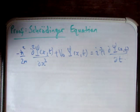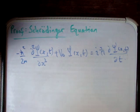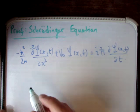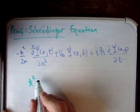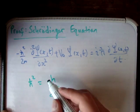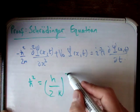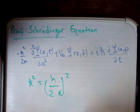Now I'm going to quickly explain the components here. This constant h-bar squared — h-bar is equal to Planck's constant h over 2π. So h-bar is Planck's constant divided by 2π, and here we have h-bar squared.